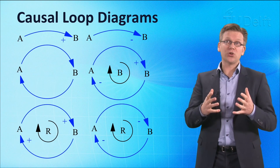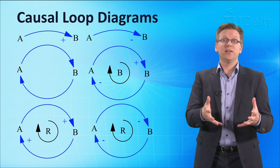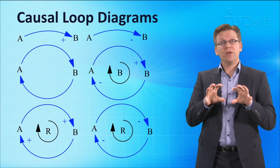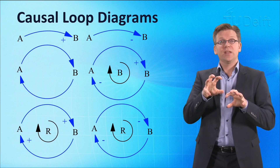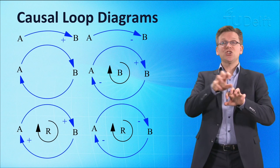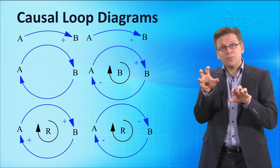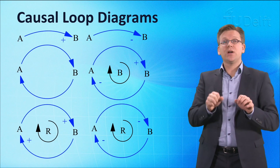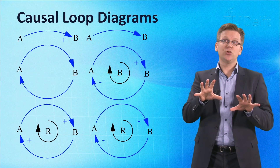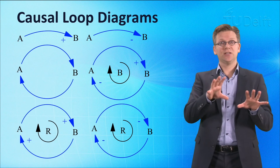But feedback loops hardly ever exist in isolation. Feedback loops are often strongly connected, and their relative strength changes over time. Complex system behaviors often arise due to such shifts in dominance between different feedback loops in the same system.